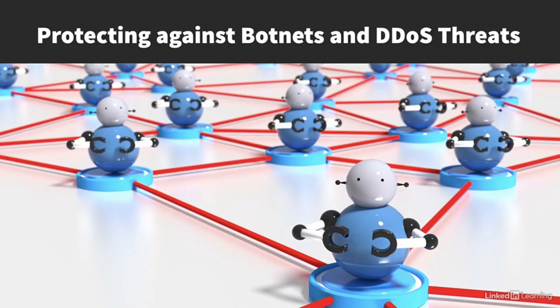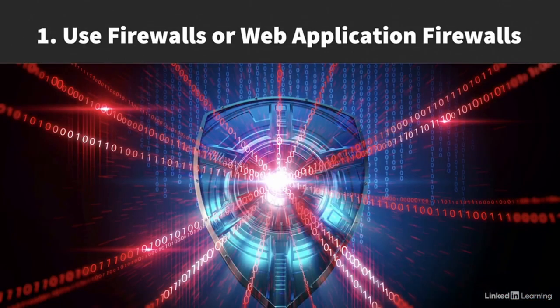Although botnets and DDoS attacks may be growing threats, there are effective ways to minimize your exposure. We'll cover how to protect against botnet and DDoS attacks and how to keep your systems from becoming part of a botnet. Let's start with five ways to protect your websites and online applications from DDoS attacks. First, you absolutely must have either firewalls or web application firewalls, or WAFs, in front of your websites. Firewalls and WAFs can detect and block unwanted and abnormal traffic, and can also control or throttle the traffic that reaches your applications.